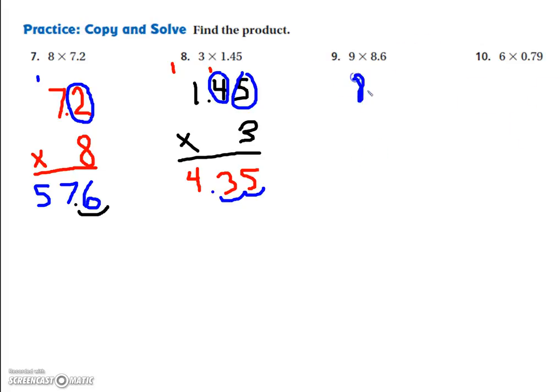Now we have 8.6 times 9, and I just multiply it as if it were 86 times 9. 6 times 9 is 54. 8 times 9 is 72, plus 5 is 77. So then I circle all the numbers after the decimal in my problem. There's just one. I put my pencil at the end of the number, and I move one place to the left. 77.4.